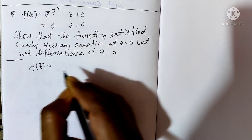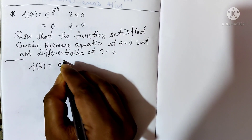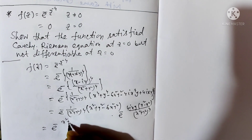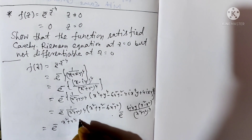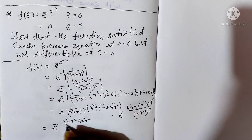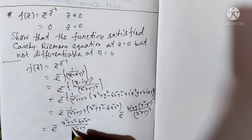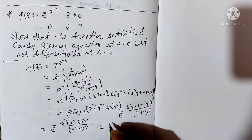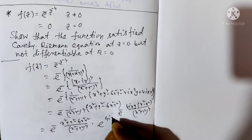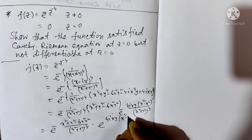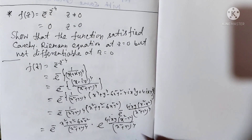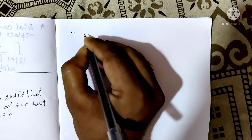f(z) = e^(-z^(-4)) can be written as e to the power of [-(x² + y² - 6x²y²) / (x² + y²)⁴] times the exponential of [4i·xy(x² - y²) / (x² + y²)⁴].